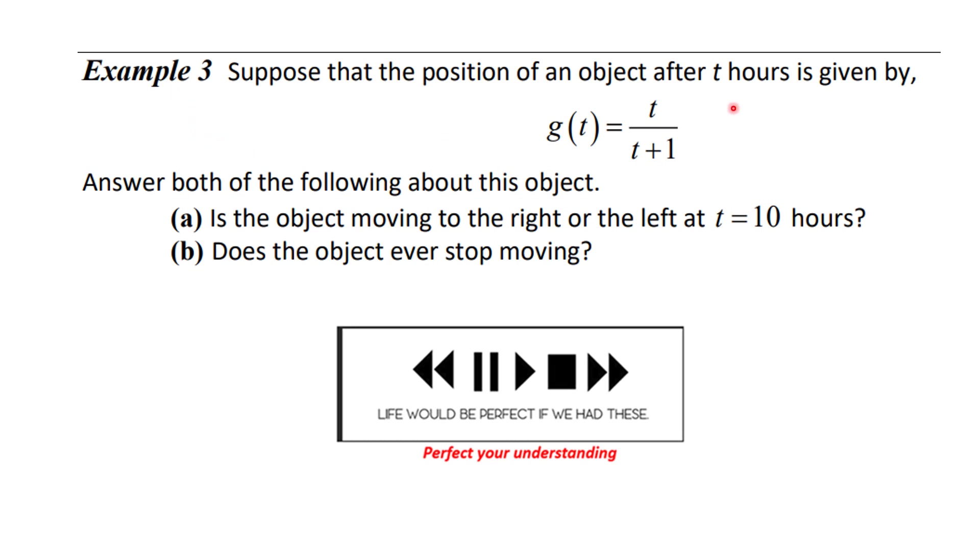So suppose the position of an object after t hours is given by this expression. Figure out is the object moving to the left or right at t equal 10 hours and does it ever stop moving? Again, this is an equation that we found the derivative of in the previous section. You know what to do. Let's see how you did.